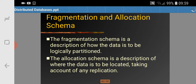The fragmentation schema is a description of how the data is to be logically partitioned. It decides what type of fragmentation we need to create — it may be horizontal or vertical fragmentation — and whatever data is needed according to selection and projection operations as discussed in the last lecture. The allocation schema is a description of where the data is to be located, taking into account any replication.